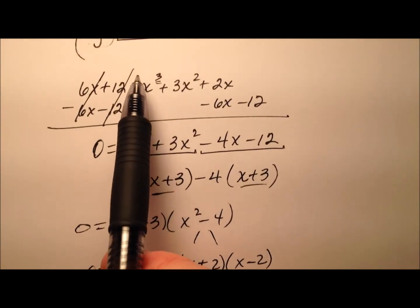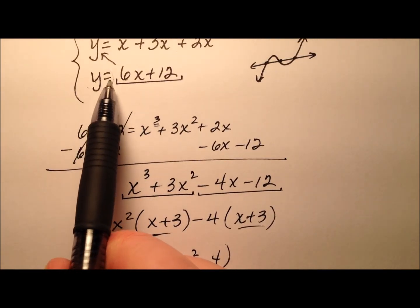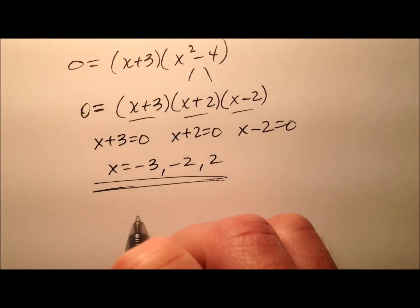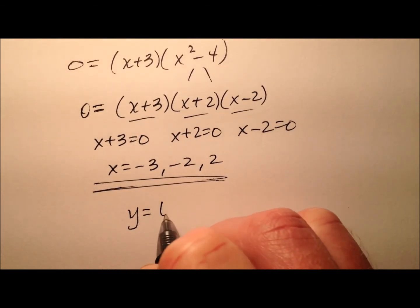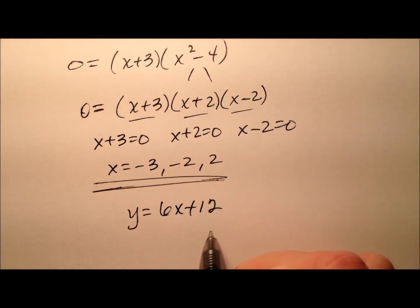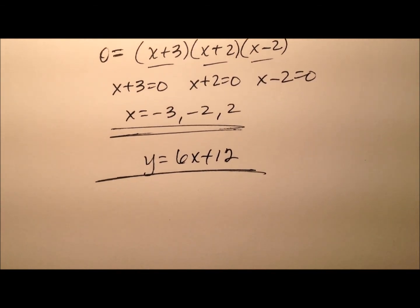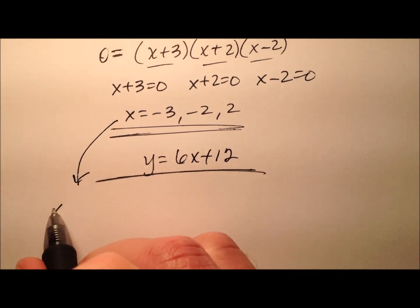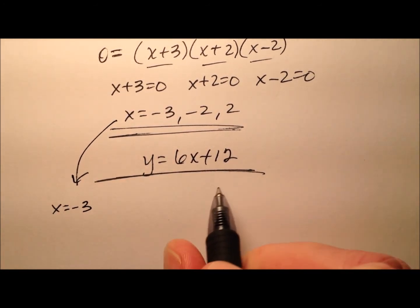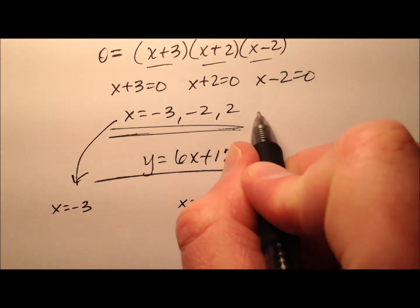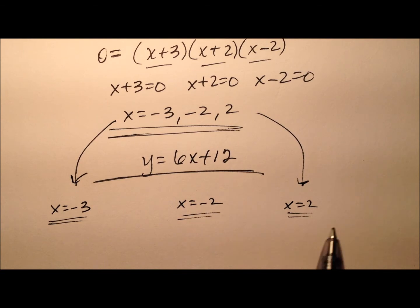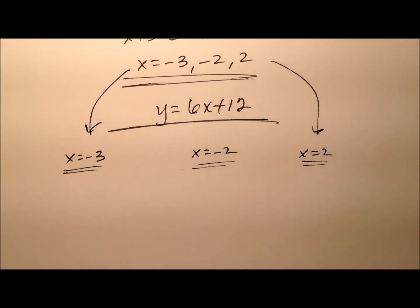So if we go back up here to the top, we had y equals 6x plus 12. So let's go ahead and plug all of our values of x back into this 6x plus 12 expression so we can get all the accompanying values of y. Alright, so down here we'll do x equals negative 3, and then x equals negative 2, and x equals positive 2. And we'll kind of work all three of these independently.